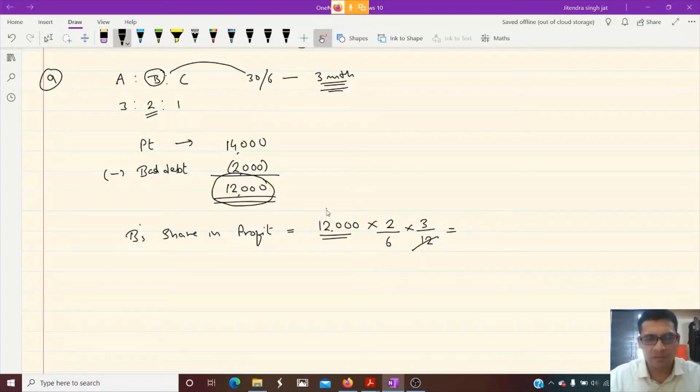Now we solve. So your answer is 1000. 1,000 rupees is the profit share of B.